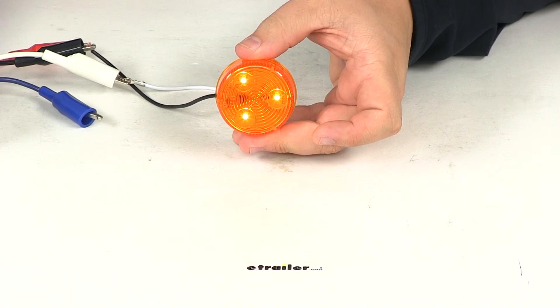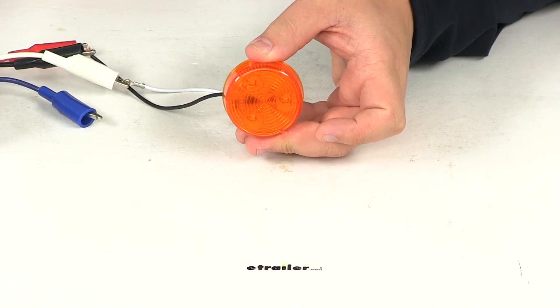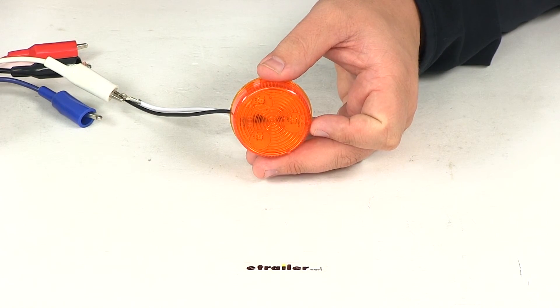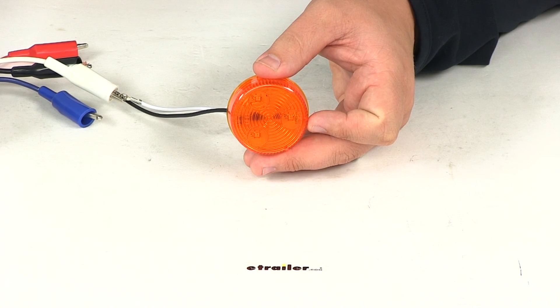That's going to do it for our review of part number MCL55AB. This is the Optronics round LED amber trailer clearance or side marker light.